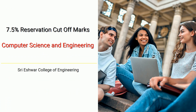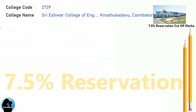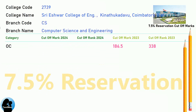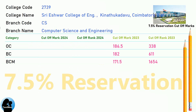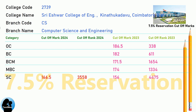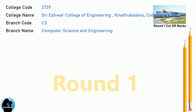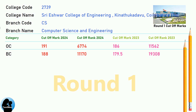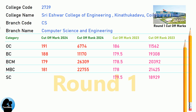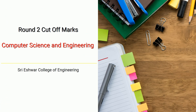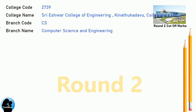TNA 7.5 Reservation Cut-Off for Shri Aishwara College of Engineering in Computer Science and Engineering. DNA Round 1 Cut-Off for Shri Aishwara College of Engineering in Computer Science and Engineering. DNA Round 2 Cut-Off for Shri Aishwara College of Engineering in Computer Science and Engineering.